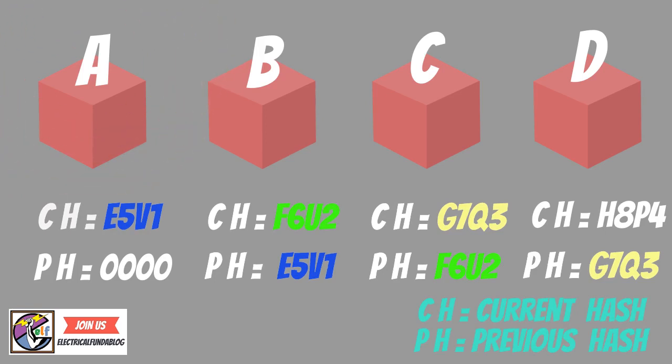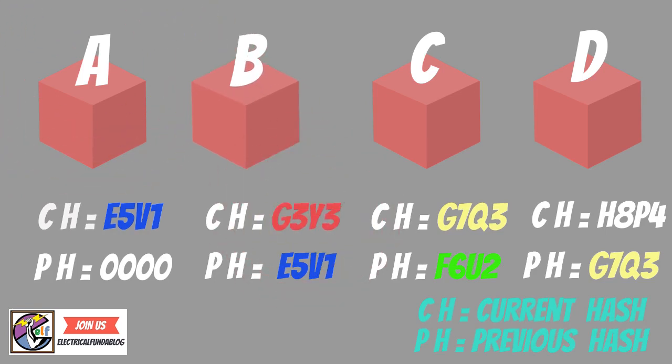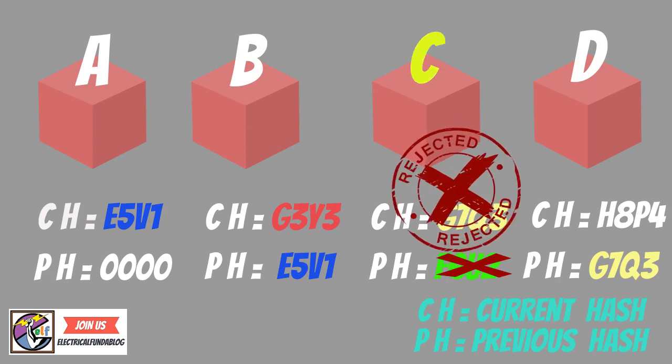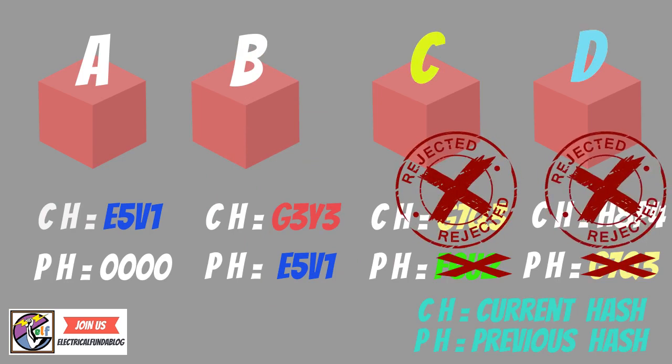If we try to tamper with block B, its hash will also be tampered, and the rest of the other blocks — C, D, and all further blocks — need to be changed. All other linked blocks will be invalid as new data has not been stored. So changing a single block will make all following blocks invalid.